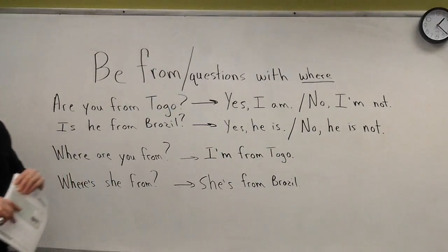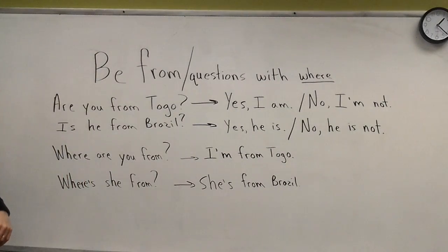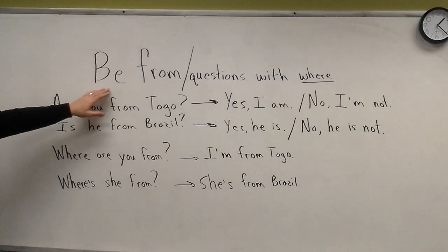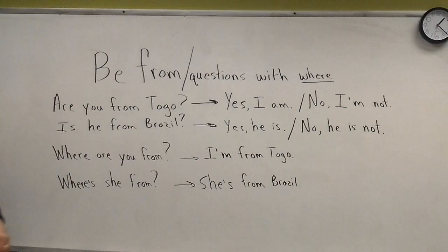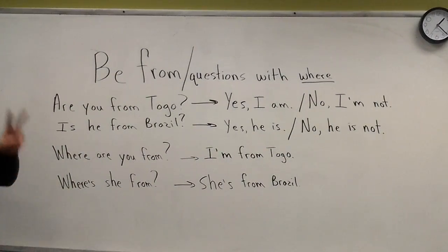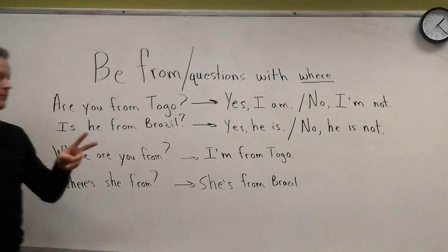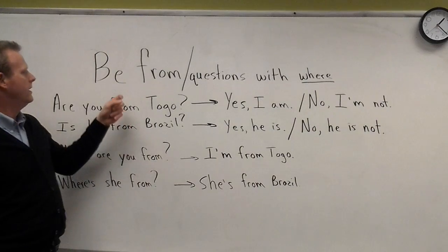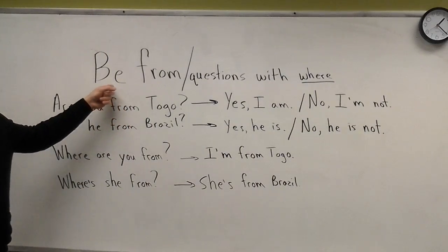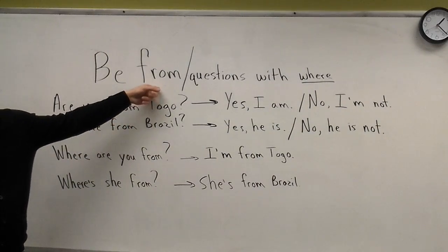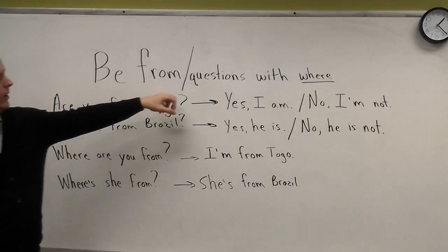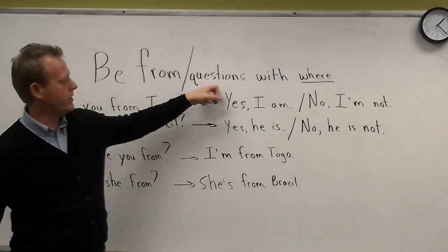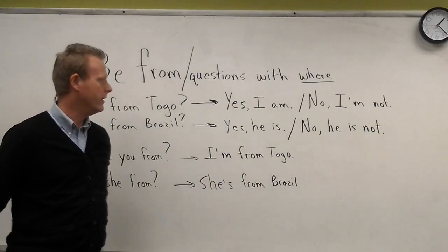Hey, I'm teacher Josh, and I'm teaching a little grammar here. Essentially in English, you can ask the same question about where someone's from two different ways. You can use 'be from,' or you can use questions with 'where.'